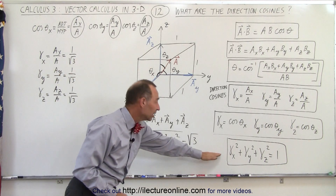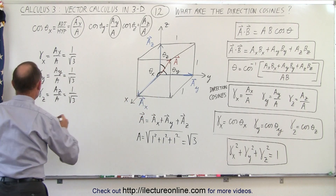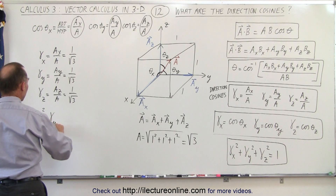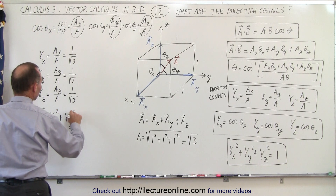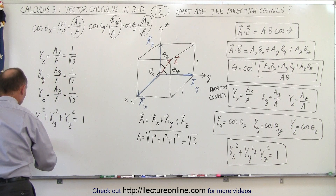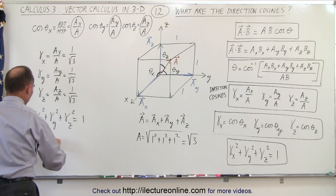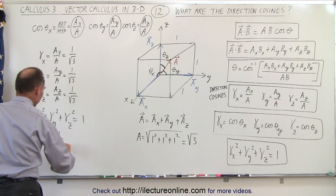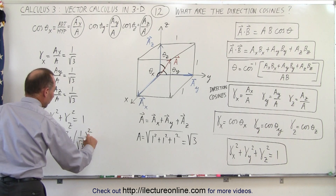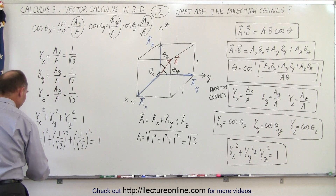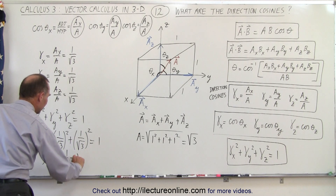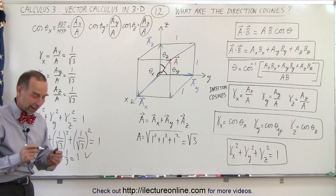To verify this is correct: the direction cosine in x squared plus the direction cosine in y squared plus the direction cosine in z squared must equal 1. That gives (1/√3)² + (1/√3)² + (1/√3)² = 1/3 + 1/3 + 1/3, which indeed equals 1. That proves the result is correct.